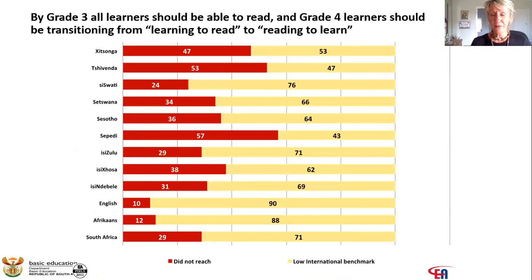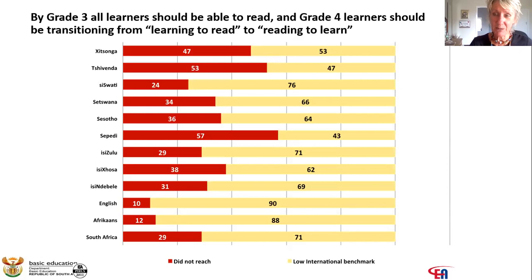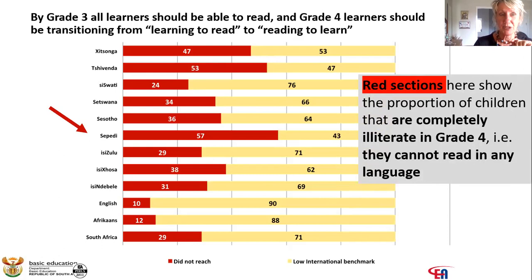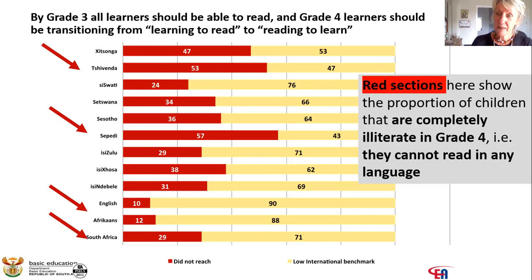All grade three students should be able to read by the time they emerge from grade three, and in grade four they should be able to read to learn. The red section shows the percentage of children that are completely illiterate in grade four — they cannot read in any language. If you are a Sepedi-speaking child, 57% of students in grade four cannot read in any language. Tswana — 53%. Even in English and Afrikaans in grade four, 10% of students cannot read in any language. In South Africa overall in grade four, 29% of our students cannot read. We have to get that reading level up.